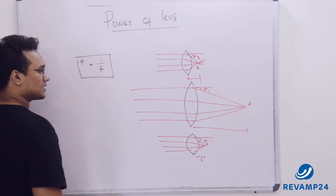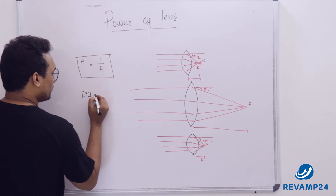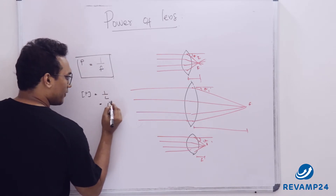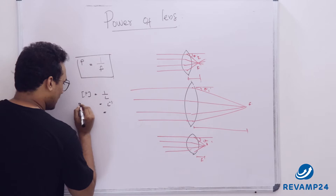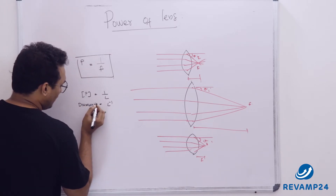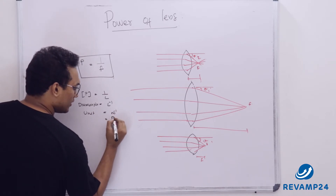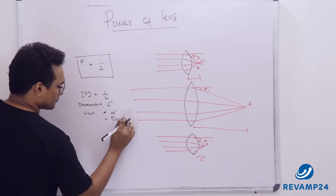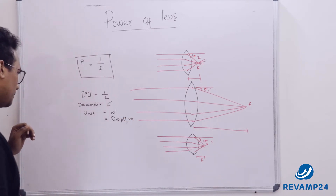Focal length is measured in meters, so the dimension of power would be 1/L, or L to the power minus 1. The unit is meter inverse, or this is called a diopter.